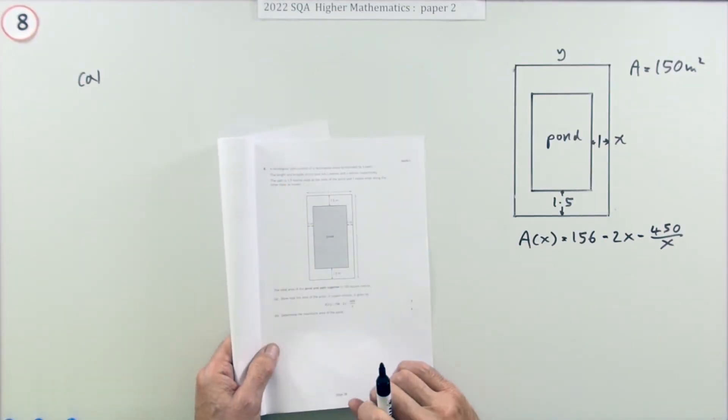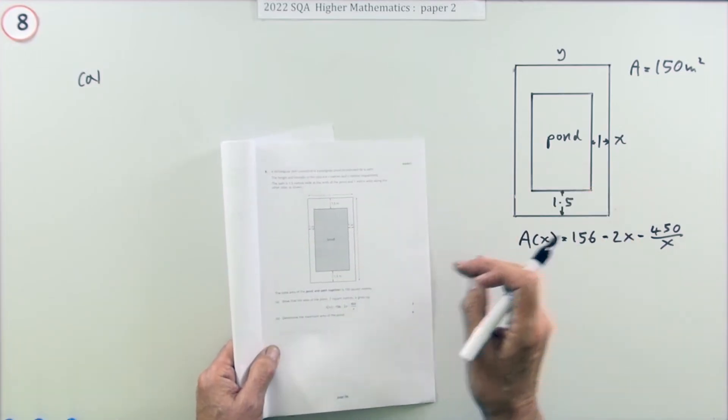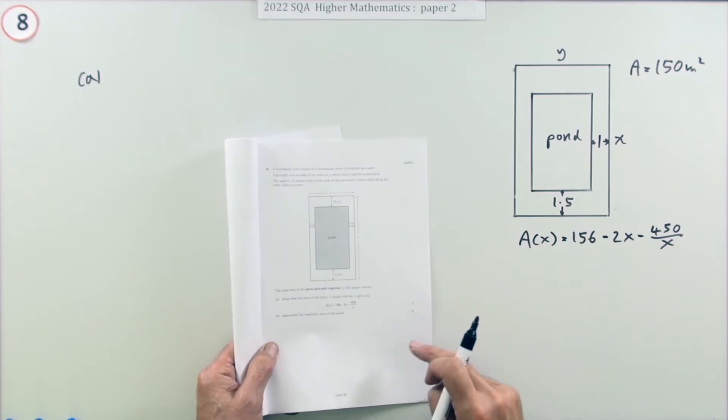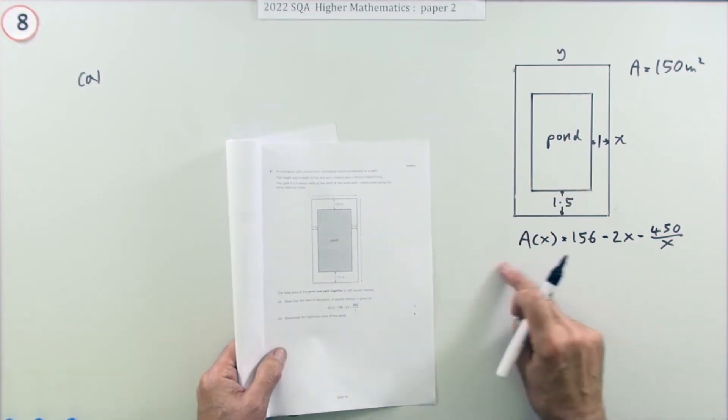Question eight from the 2022 Higher Maths Paper 2, a nine-mark question. As soon as you see the little picture like this, something that looks like second year or National Five, you know it's the optimization question, the one with two parts in it.